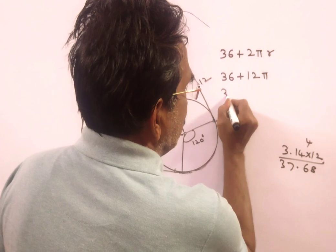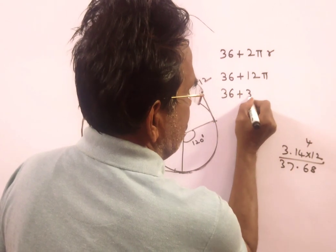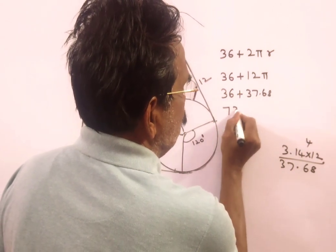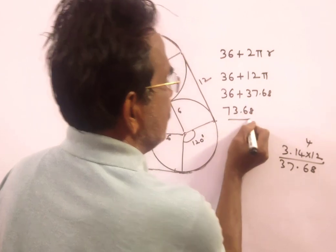36, 37. So 36 plus 37.68, friends, that comes to 73.68 cm.